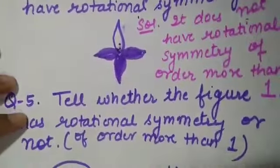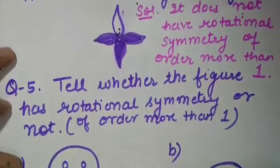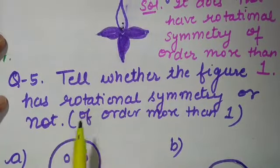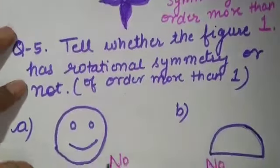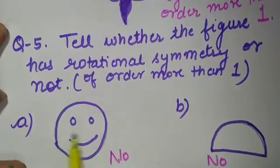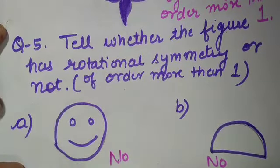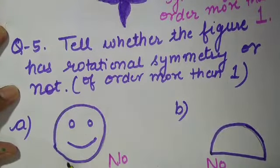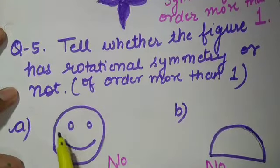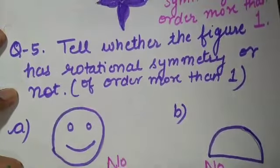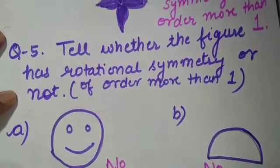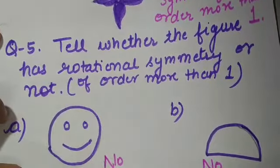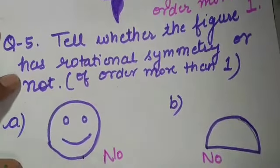Come to question number 5: tell whether the figure has rotational symmetry of order more than 1 or not. For the first figure, on revolution I find that in a complete turn this figure will not get the same shape as the original one. So this figure does not have rotational symmetry of order more than 1 — the answer is no.